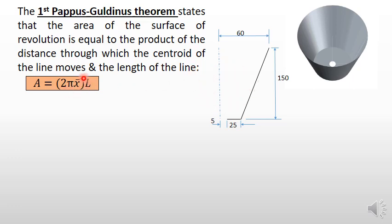The distance traveled by the centroid is 2π x̄ (2πr), and L is the total length of this line—the length of the small segment and the length of the long segment. First, divide this entire line into two parts: length 1 and length 2.